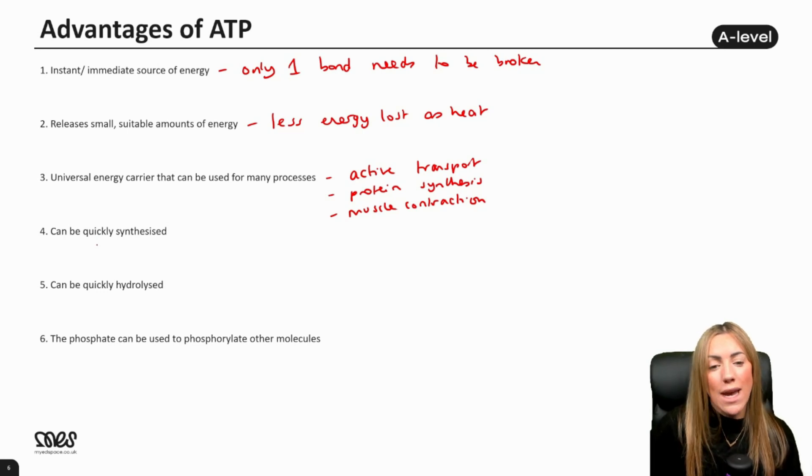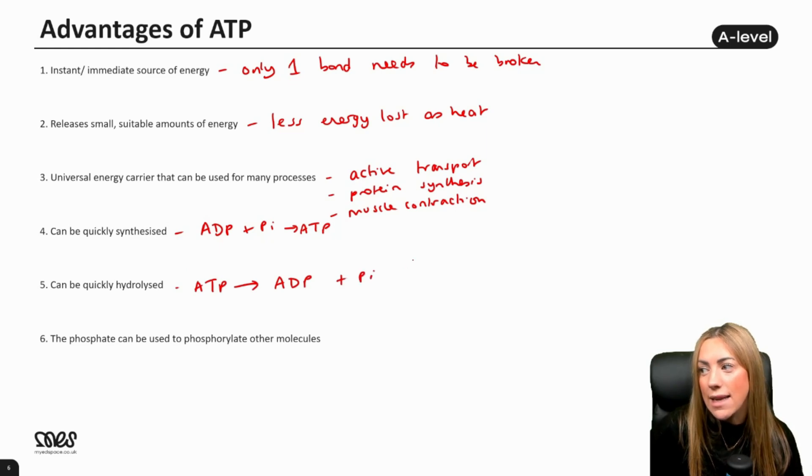Number four, it's really quick to synthesize or make ATP. As we've seen with our equations, ADP plus Pi makes ATP and cells can make that really easily. Equally, it's really quick to hydrolyze it or break it down. So ATP is quickly hydrolyzed into ADP and Pi and that's when it releases energy.